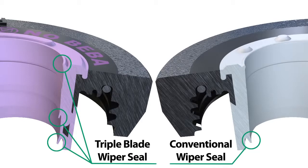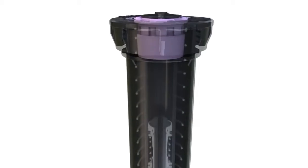thanks to a precisely engineered patent-pending triple-blade wiper seal. The RD1800's top seal flushes during pop-up and wipes the stem clean during retraction, preventing external debris from entering.